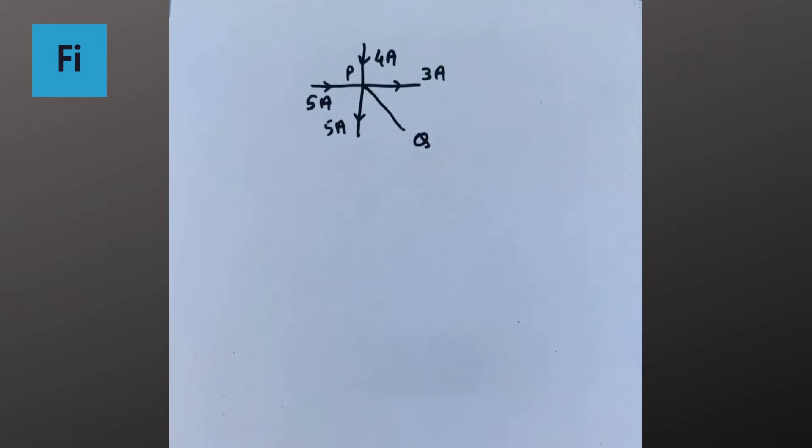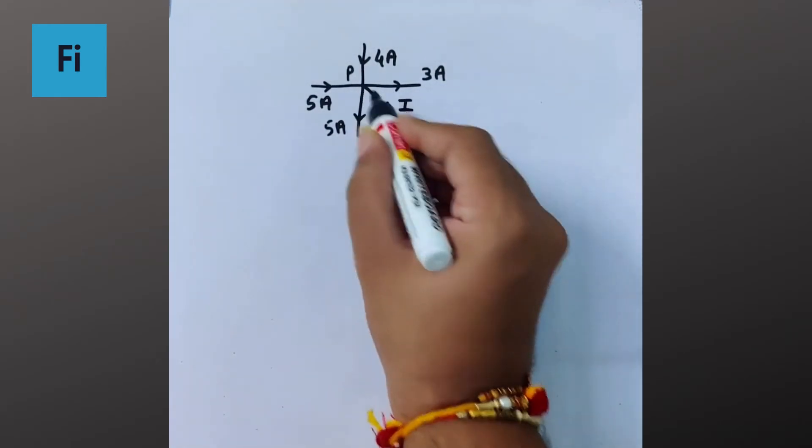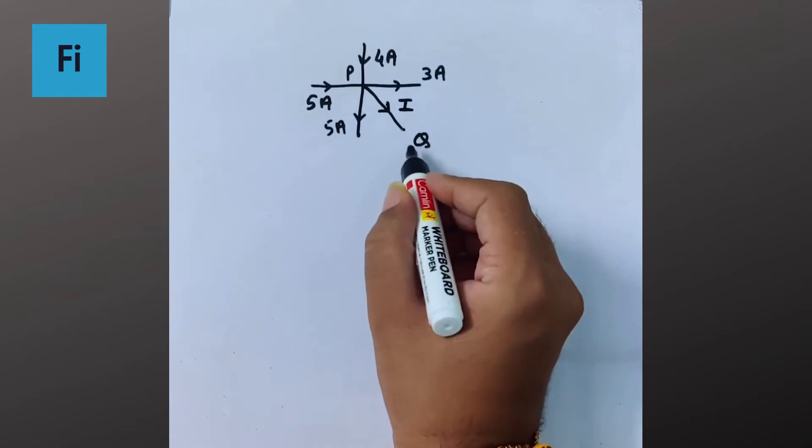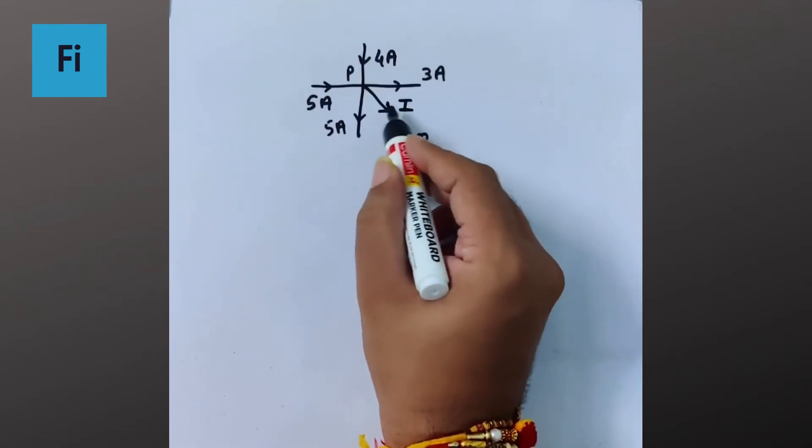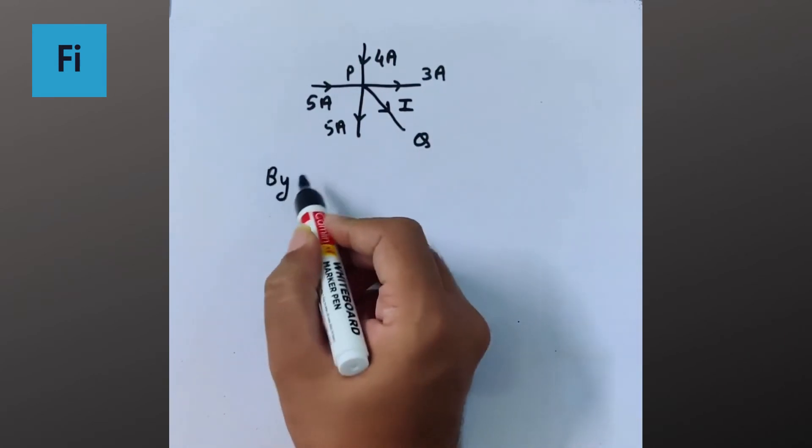So let's assume the current to be I flowing from P to Q. I'm assuming this direction. If the current value comes negative, it means the direction I assumed was wrong. Obviously, we'll apply Kirchhoff's current law at point P, the junction P.